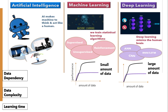Algorithms used in machine learning tend to pass data in parts, and then those parts are combined to come up with the result or solution. Whereas deep learning systems look at an entire problem or scenario in one go. With greater data complexity, machine learning algorithms fail.